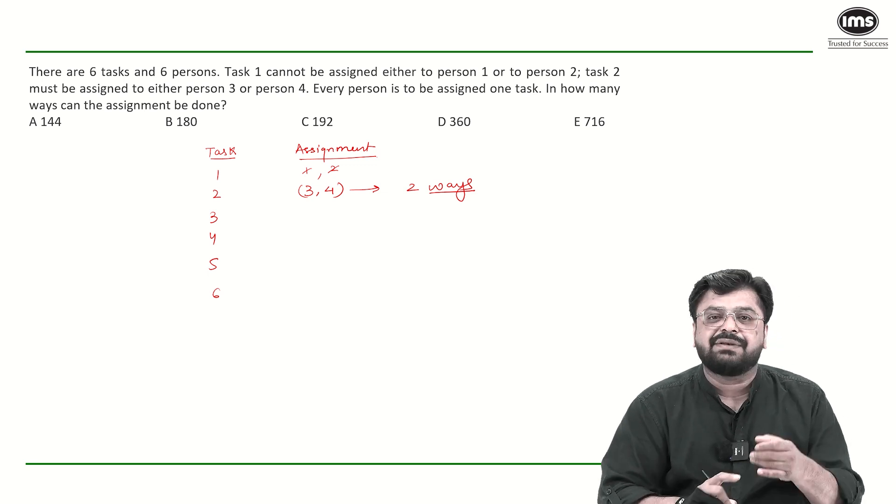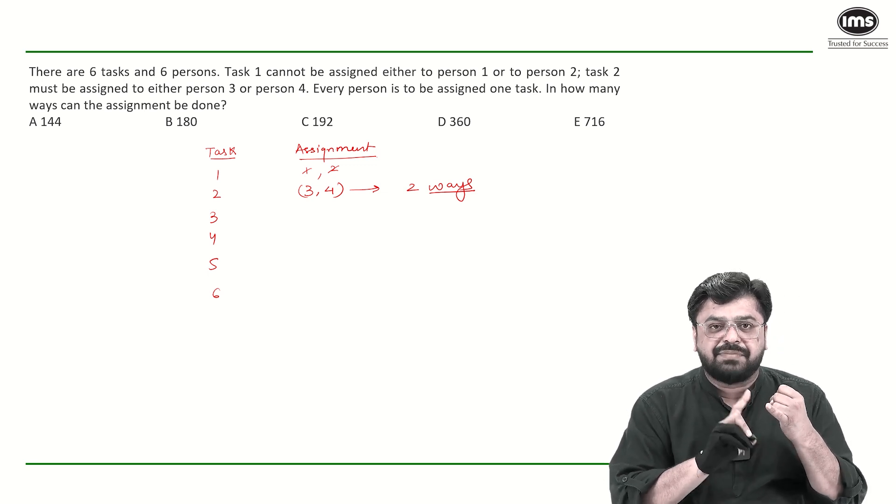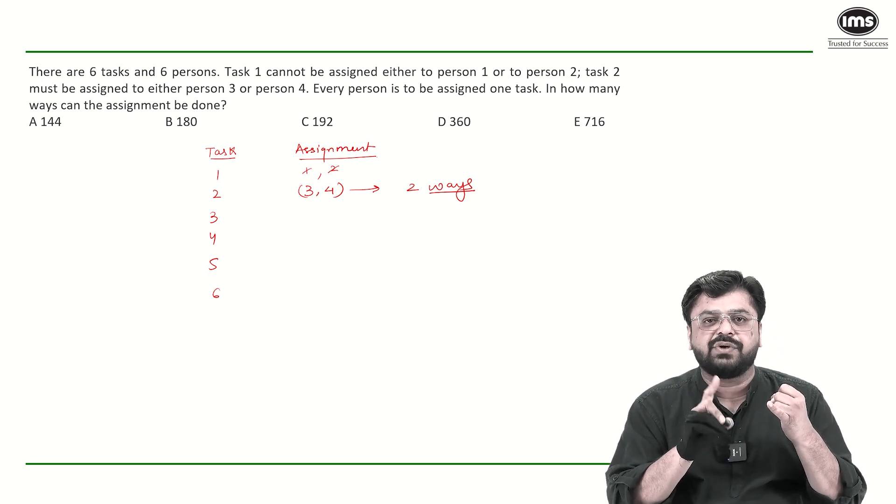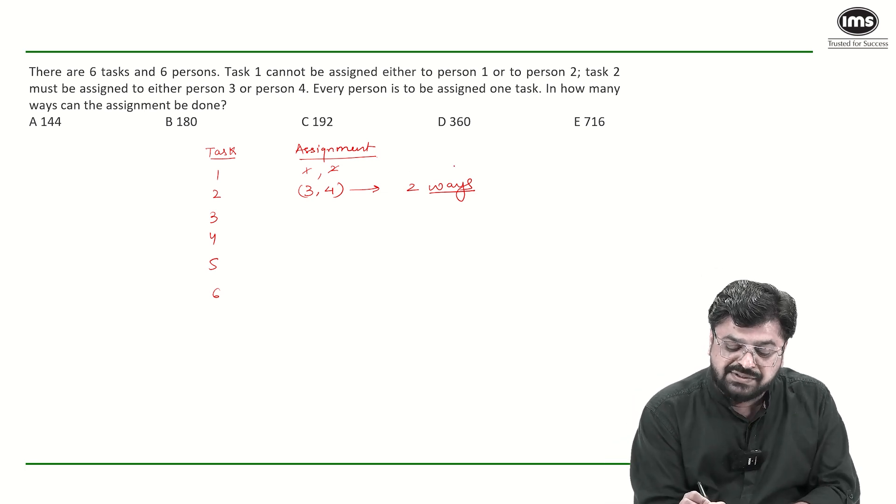That means task 1 can be done either by person 3 or 4. One of 3 or 4 can do it, or person 5 or 6 can do it. So task 1 can be assigned in 3 ways only.